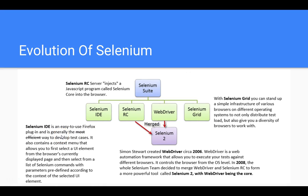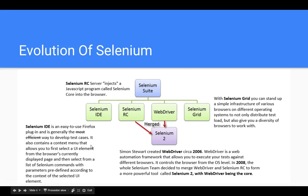Selenium IDE is generally a way to develop test cases. It also contains a context menu that allows you to first select a UI element from the browser's currently displayed page, then select from a list of Selenium commands with parameters predefined according to the context of the selected UI element. What people usually do is just record the script in the IDE and play it back, but after that they won't be able to move the script to Eclipse or a Java-based IDE or another development language.